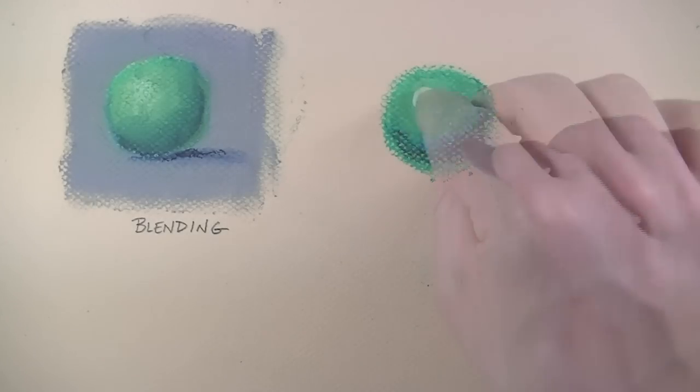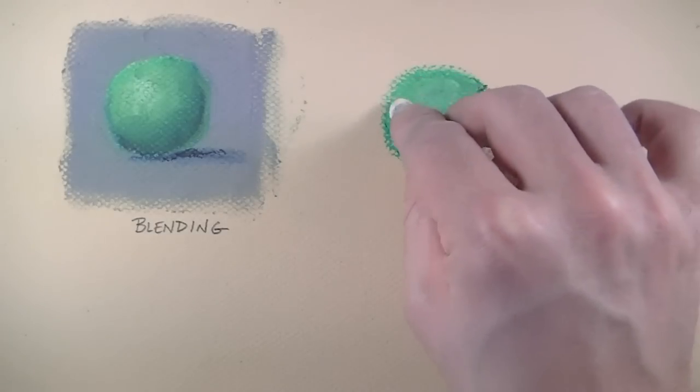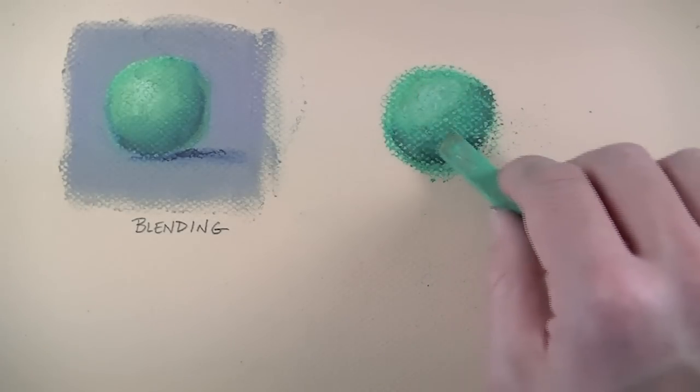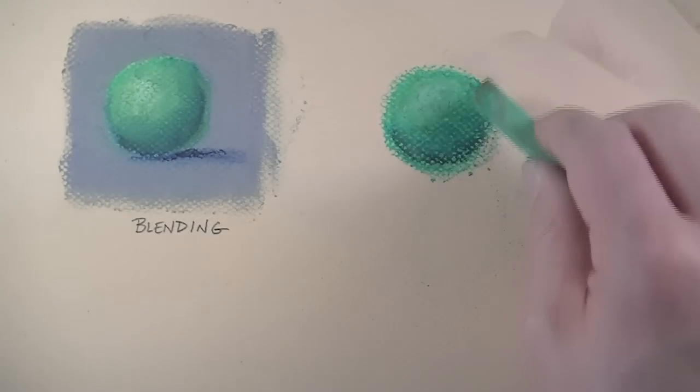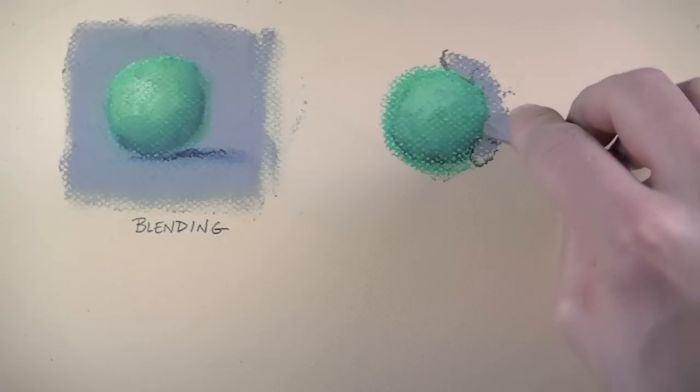I'm using the same colors that I used in the blending example except this time again no blending occurs. The form of the sphere is established by using green followed by dark blue, yellow, white, and then dark gray.